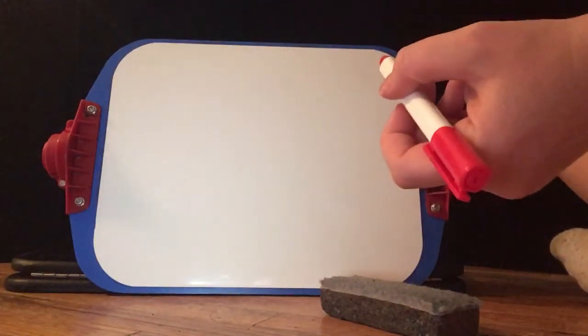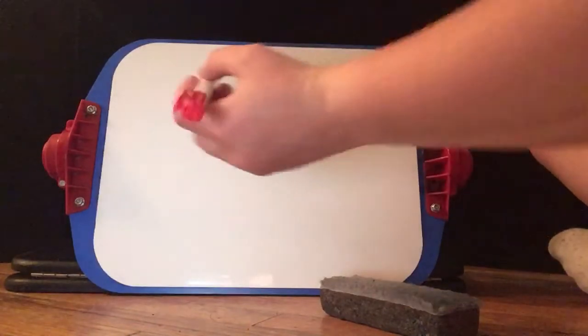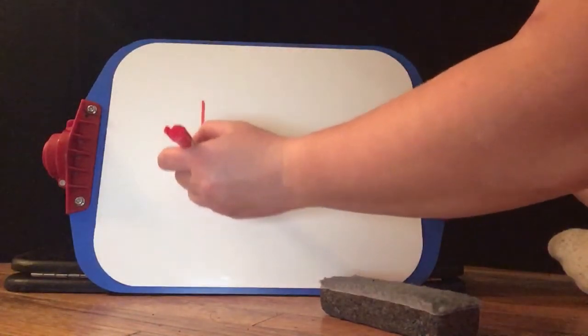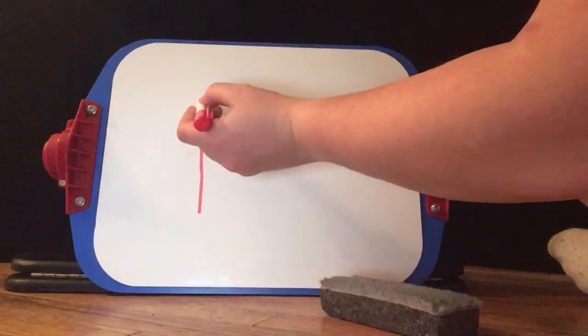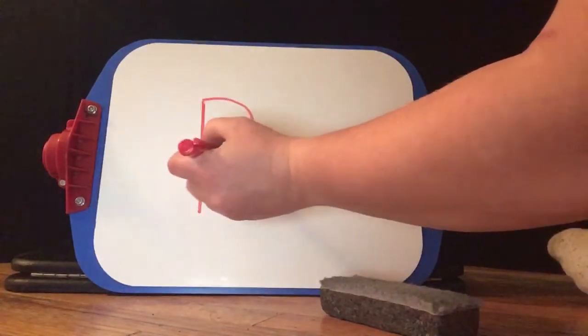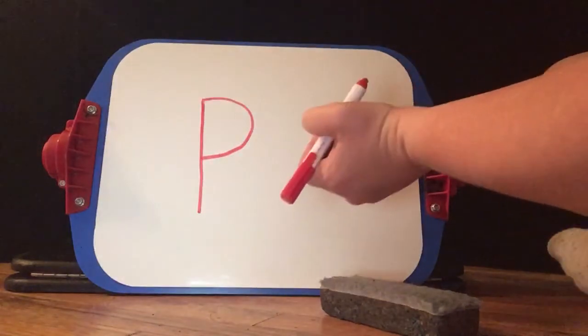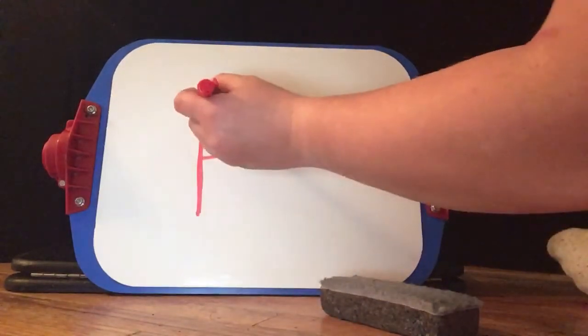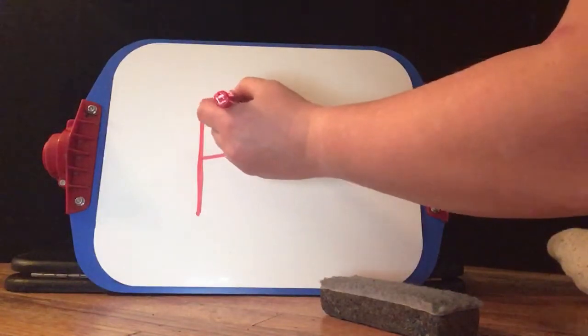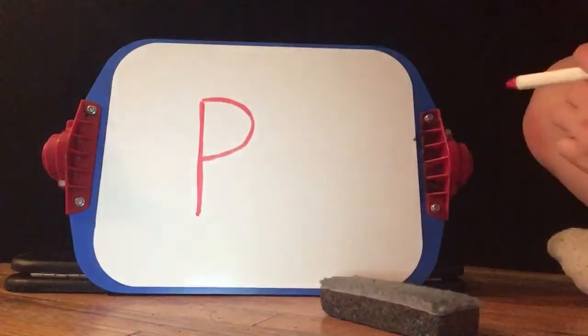Just like F and E, we're going to start with a big line down. And then we're going to come back to the top and make a small curve to make a P. So it's big line down, come back to the top, make a small curve, P.